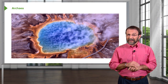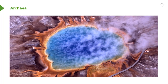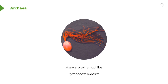Archaea are often found in extreme environments, and we like to call them extremophiles because they love those extreme environments. Here is a hot spring in Yellowstone National Park in the U.S. where the waters are over 90 degrees centigrade — some of the archaea love to grow in these environments. One archaea that grows in such extreme environments is called Pyrococcus furiosus. You can see it's an oval-shaped cell with lots of what we call flagella at one end, which is how these cells move around.